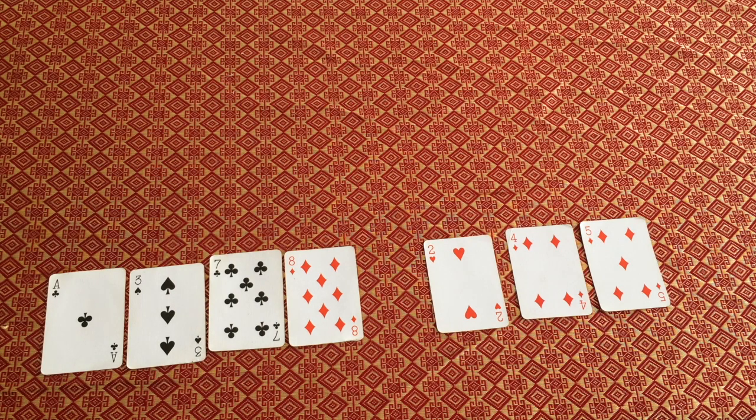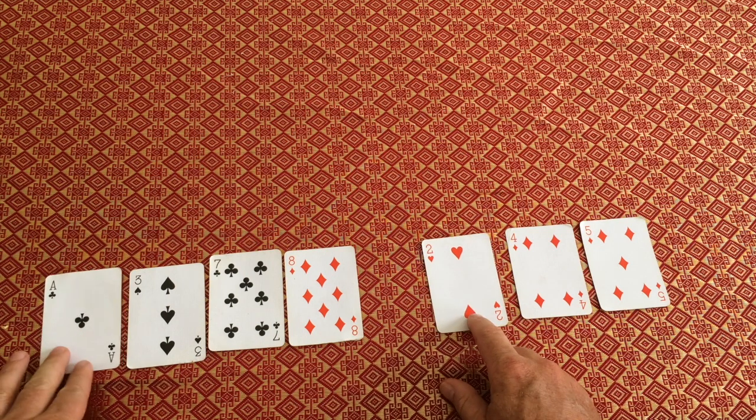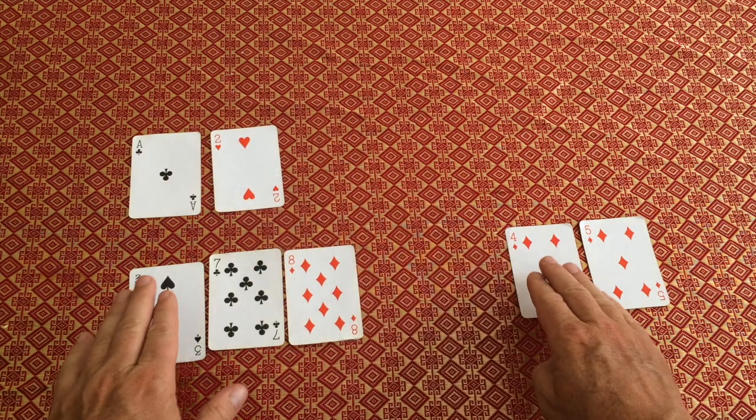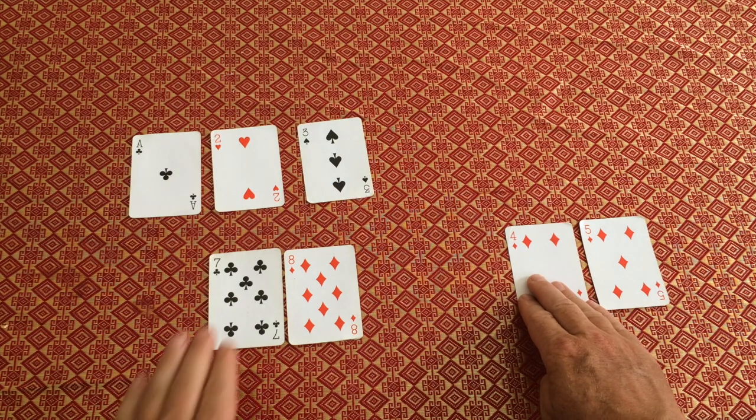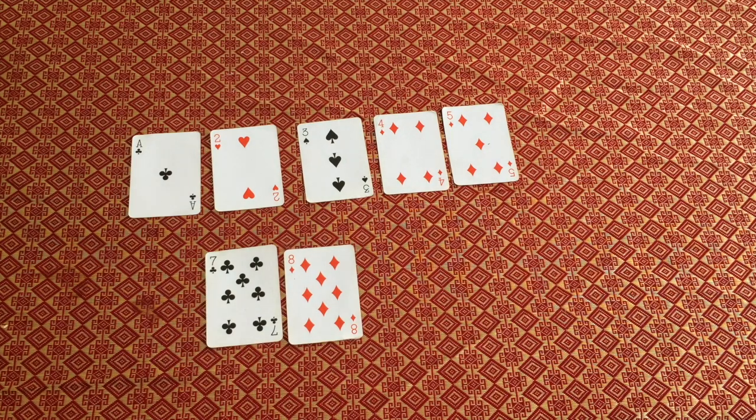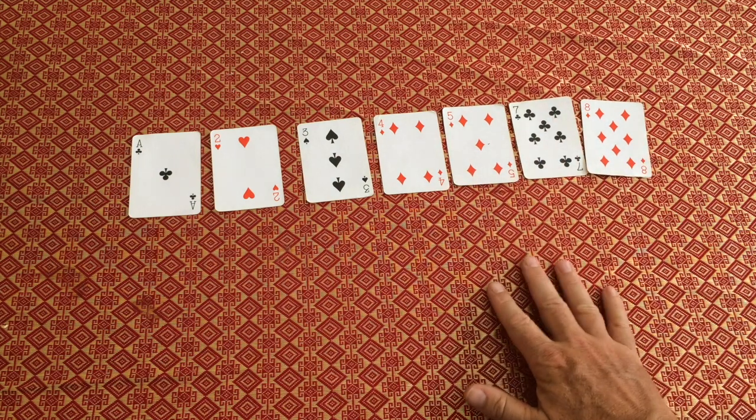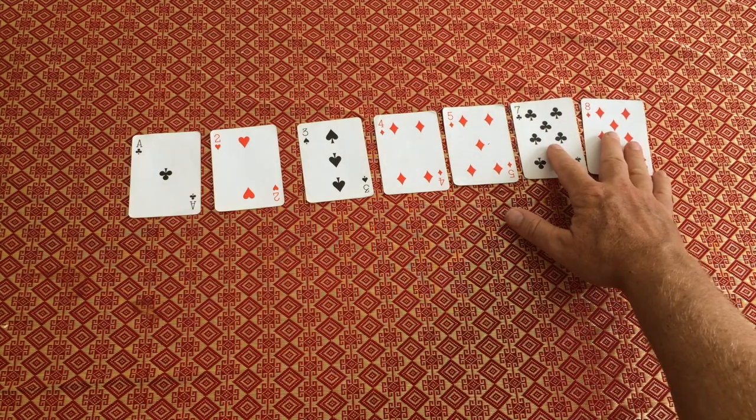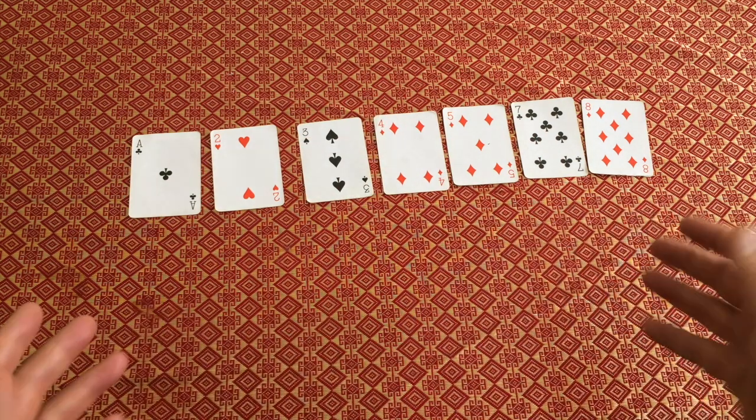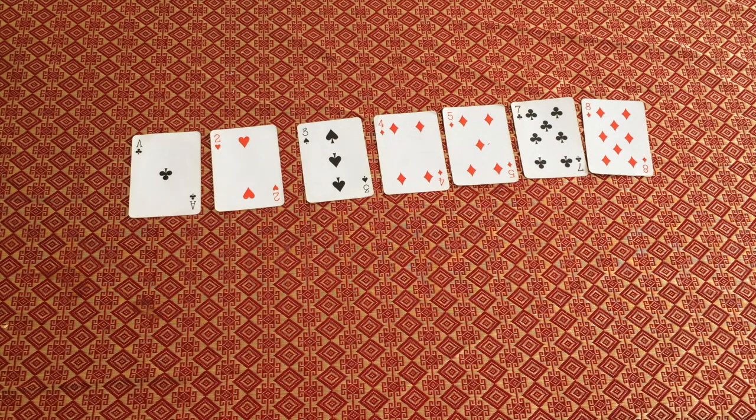Let's illustrate the linear time merge on these two sorted lists, one of size four, one of size three. We do the comparison here of the top elements. Move this to the output pile. Now compare these. Move that one to the output pile. Next. Next. Next. And now we can move this entire list here because we know that the right hand one is empty and that everything here must be bigger than everything that's already been down on the output list. We've now got a sorted list of the full size formed by knitting together the two originally sorted lists that we started with.